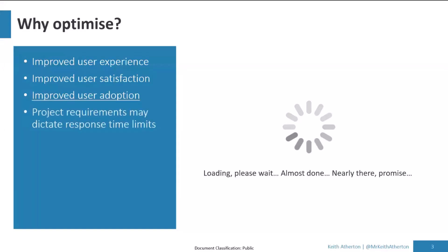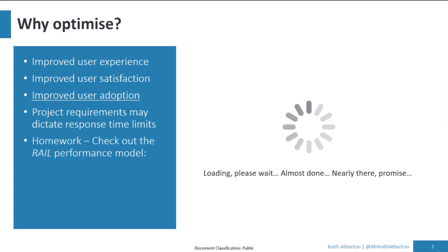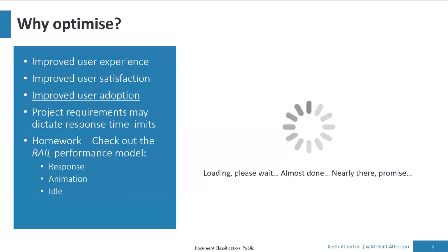You may also be on a project — whether external or internal — where there's a requirement for certain response time limits, such as when the app loads or a screen loads. This is quite common in web application projects. There are performance models that already exist for this; a common one is RAIL, developed by the Google Chrome team. RAIL stands for Response, Animation, Idle time, and Load — key things for any app to give a good user experience.